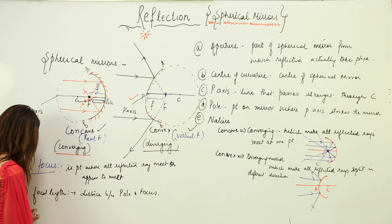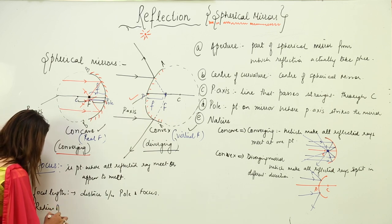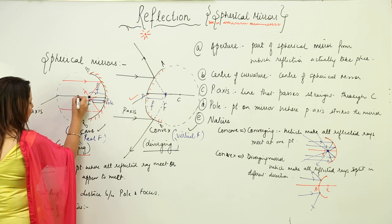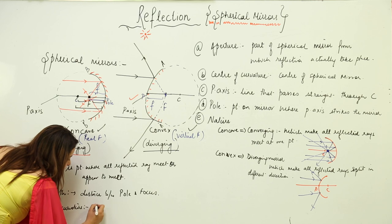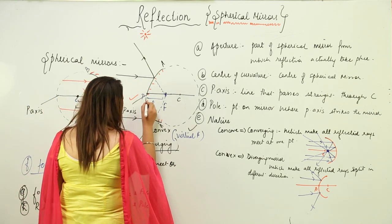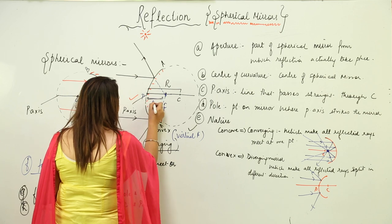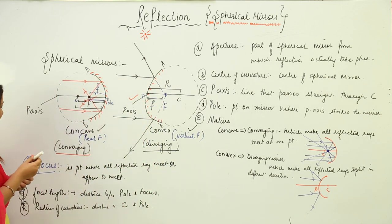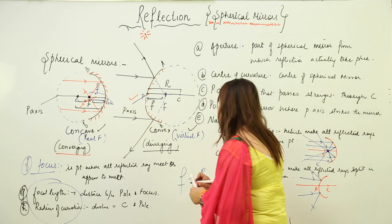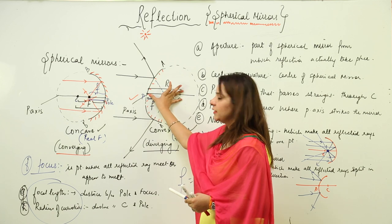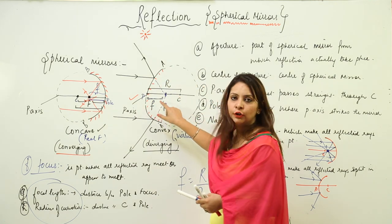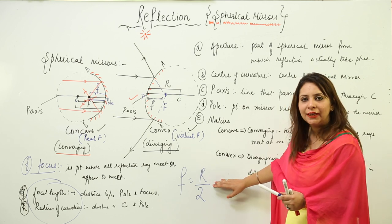Another term is radius of curvature, which is the radius of the spherical mirror — the distance between the center of curvature C and the pole P. There is a relation between focal length and radius of curvature: focal length is always half of the radius of curvature. So the radius is twice the focal length, and these distances are always in that exact proportion.